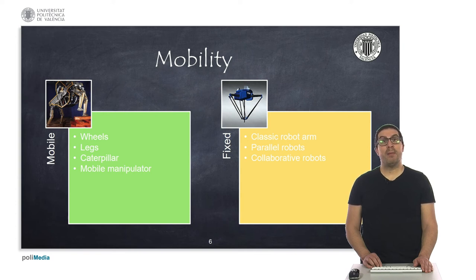Also, we can find mobile manipulators, which are robotic arms mounted on a mobile base. On the other hand, some robots can have a fixed link attached to the ground or a seal, or any other structure, and this is the case, such as classic robot arms, also parallel robots and collaborative robots, as you can see here.